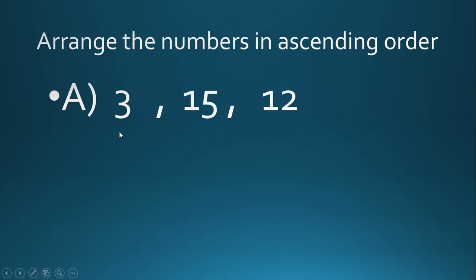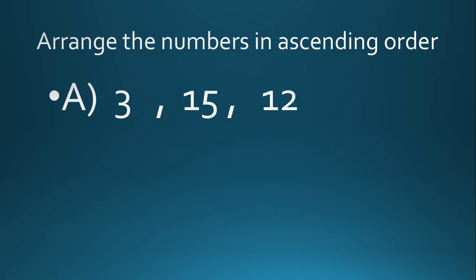First question: arrange the numbers 3, 15, and 12 in ascending order. The first rule is we have to check the digits — one digit or two digits. 15 and 12 are two-digit numbers and 3 is a single-digit number. Since one-digit numbers are always smaller than two-digit numbers, 3 is the smallest.